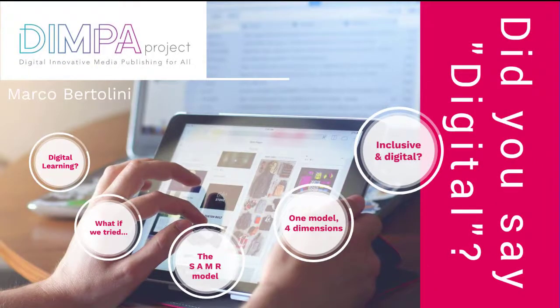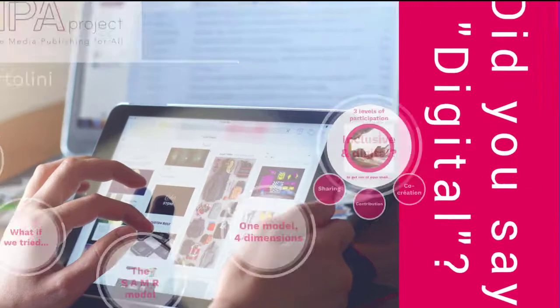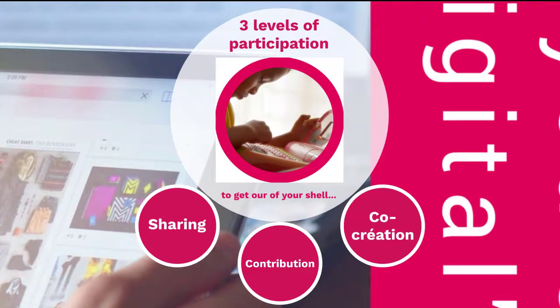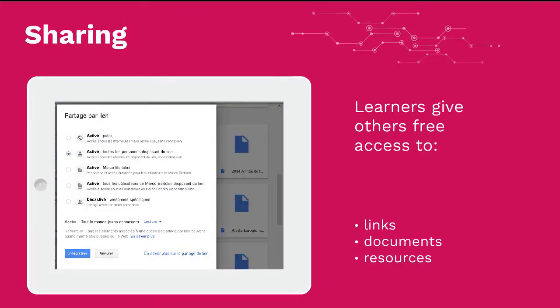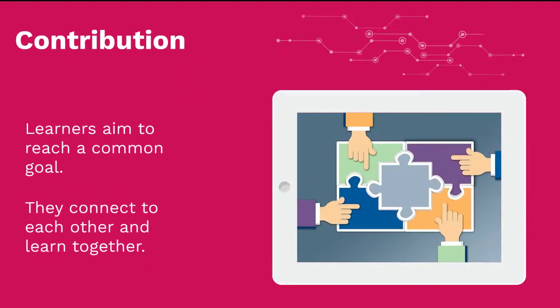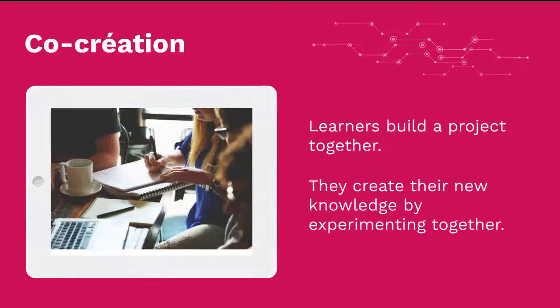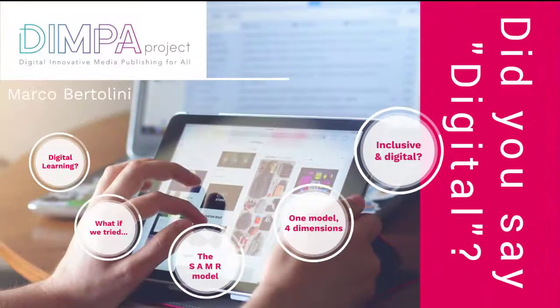Digital must also be inclusive, and there are three levels of inclusive digital working. The first level is sharing — simply sharing resources, links, and documents with other participants. The second level is contribution, where people share the same goal and pathway and learn together. Finally, the highest level is co-creation, meaning learners build the project together, creating new knowledge by experimenting together — that's what we call inclusive digital learning.